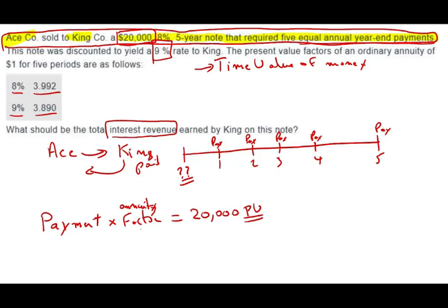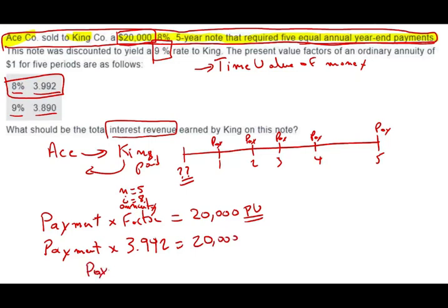So if we take the payment times this factor for the note, 3.992, will give us $20,000. Now we can find the payment by dividing both sides by 3.992. The payment equals $20,000 divided by 3.992. The payment is $5,010. Now we know the payment.